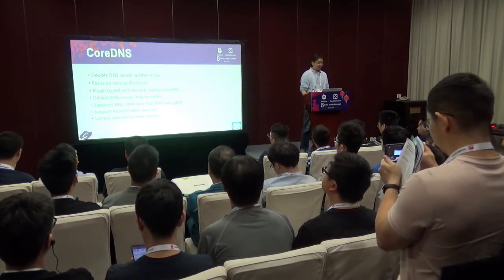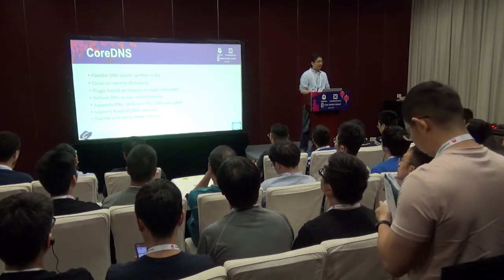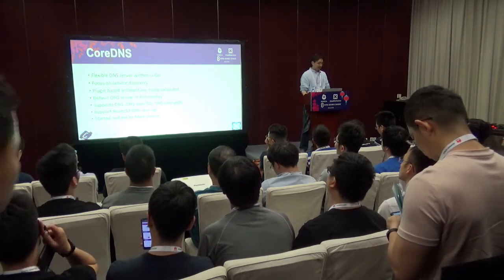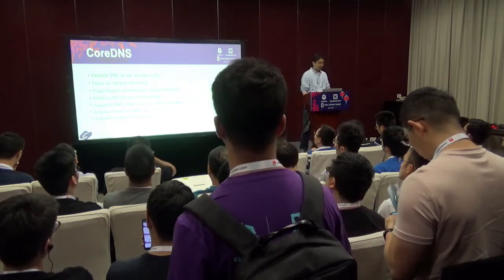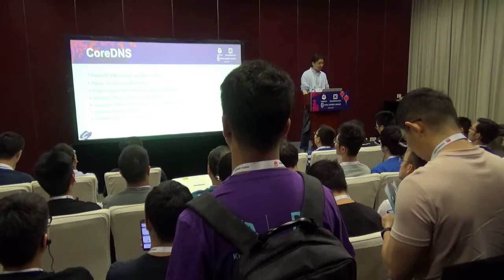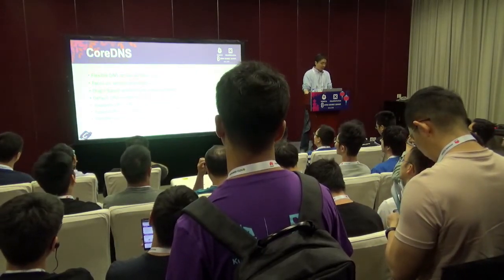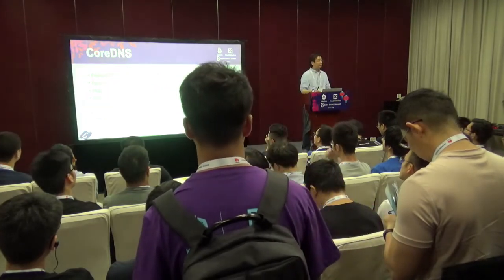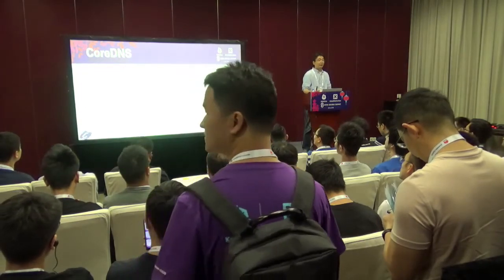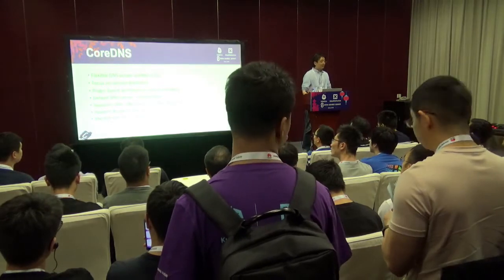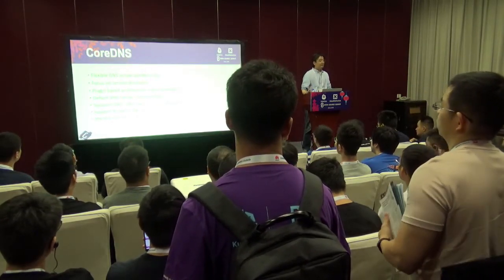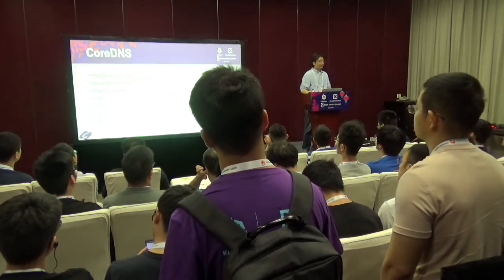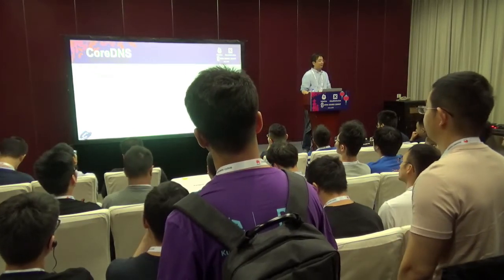CoreDNS is now the default DNS server in Kubernetes. We have been part of the DNS release since Kubernetes 1.11, and in 1.13 we became the default DNS server. CoreDNS itself supports different protocols — DNS, DNS over TLS, and DNS over gRPC. In addition to Kubernetes integration, CoreDNS also has roughly real-time data sync. So if you deploy CoreDNS in your Kubernetes cluster, you can wire it up with Route 53 AWS backend, allowing easy integration of on-prem deployment with cloud deployment and hybrid cloud scenarios.